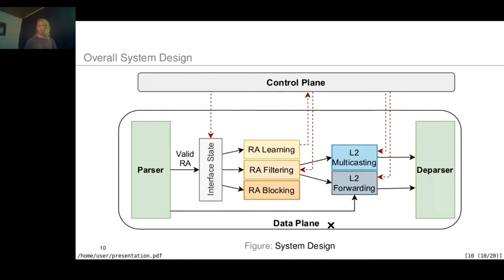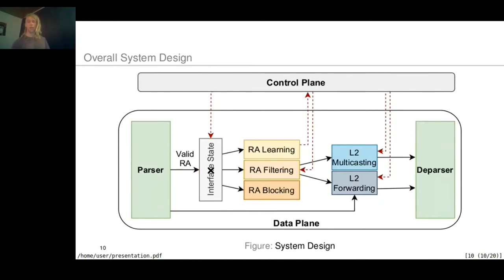The data plane is based on the reference implementation BMv2 (Behavior Model version 2). It provides basic layer 2 switch functionality by forwarding packets based on the layer 2 forwarding table. The data plane is also able to parse and detect router advertisement packets and forwards them — depending on the interface state and filtering rules — either to the control plane for monitoring or automatic configuration, broadcasts them to the network, or blocks them entirely. For monitoring purposes, the data plane sends all blocked router advertisement packets to the control plane.